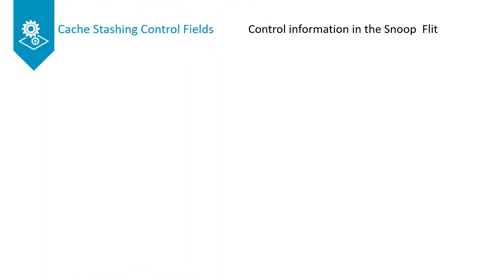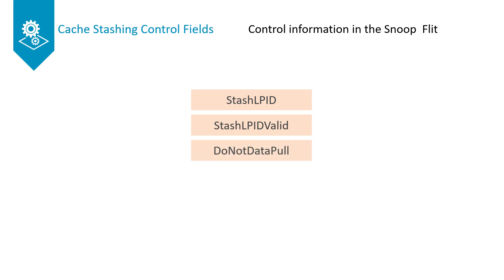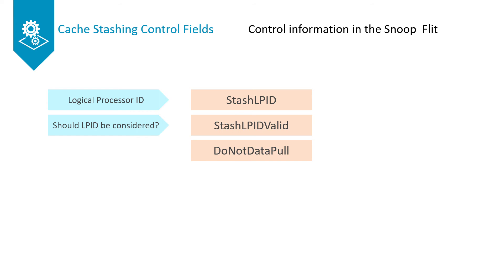The snoop flit also contains the Stash LPID and Stash LPID Valid fields. When the cache stash request has Stash LPID Valid equal to 1, the HNF uses the same Stash LPID and Stash LPID Valid values from the request in the stashing snoop it generates. In addition to these two fields, the snoop flit adds the Do Not Data Pull field. This field is used to tell the stash target whether it can request the data pull mechanism. If set to 1, the stash target cannot request data pull.